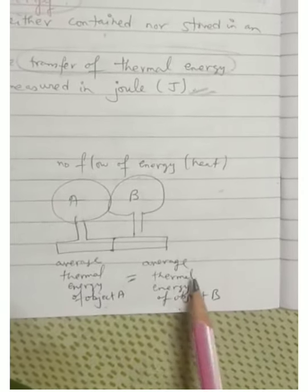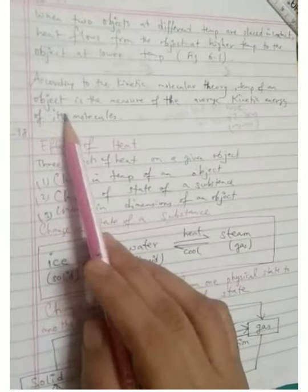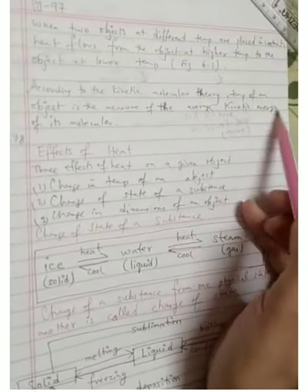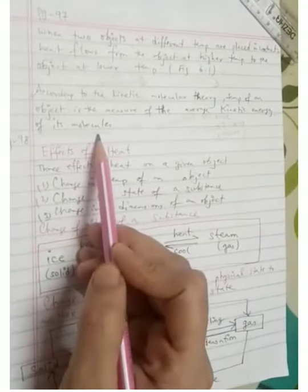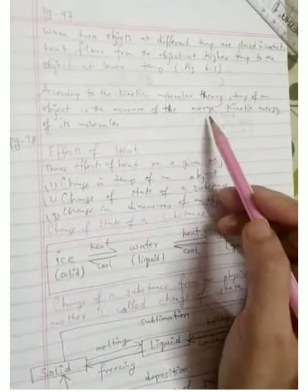When there is no flow of energy, the average thermal energy of object A is equal to the average thermal energy of object B. According to the Kinetic Molecular Theory, the temperature of an object is the measure of the average kinetic energy of its molecules.